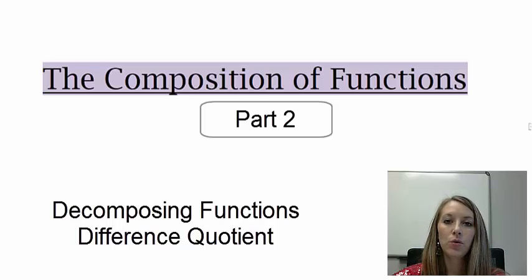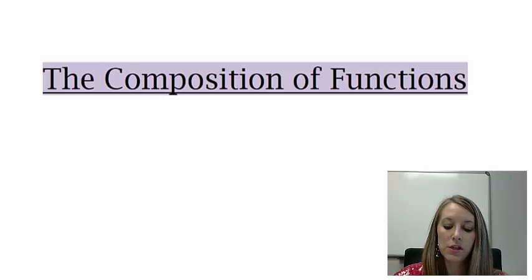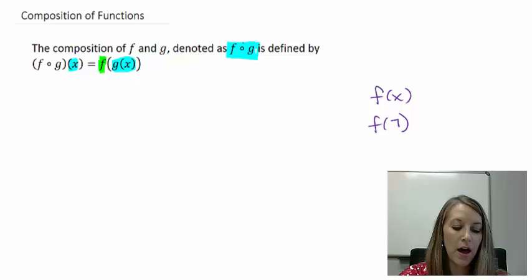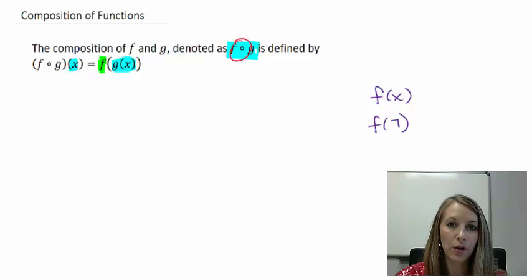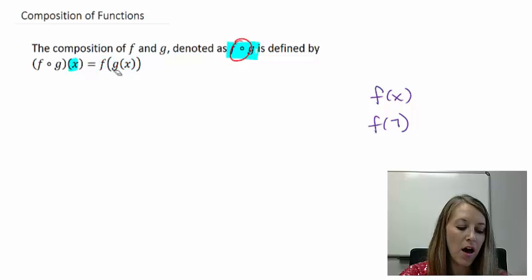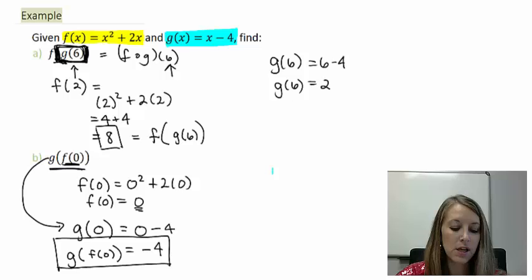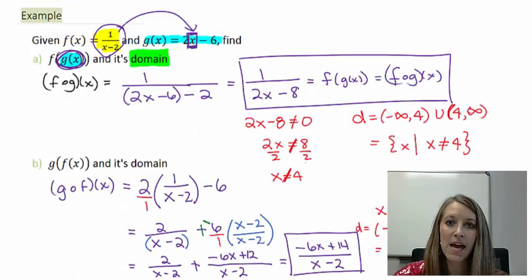So in the last video we learned how to compose functions. We learned the notation can be written in two separate ways: f of g, where the of is defined as this little circle here, or actually writing it like we see it, f of g of x. We did quite a few examples of substituting in or composing functions, two of them where we substituted in numbers and two where we just left it as x and found the domain from there.